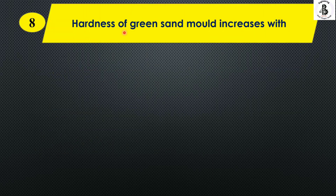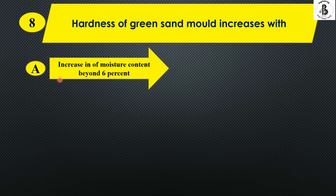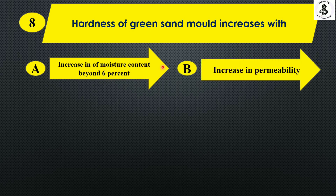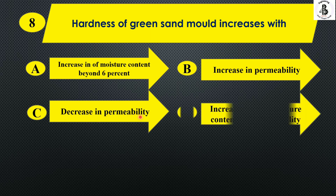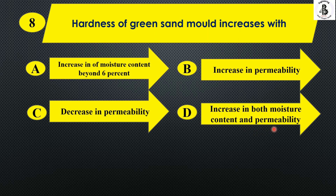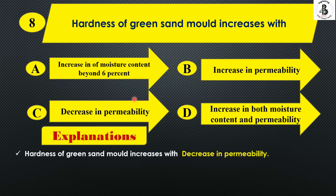Hardness of green sand mold increases with: Option A increase in moisture content beyond 6%, Option B increase in permeability, Option C decrease in permeability, Option D increase in both moisture content and permeability. Increasing the hardness of green sand is only possible with a decrease in permeability. The right answer is Option C.